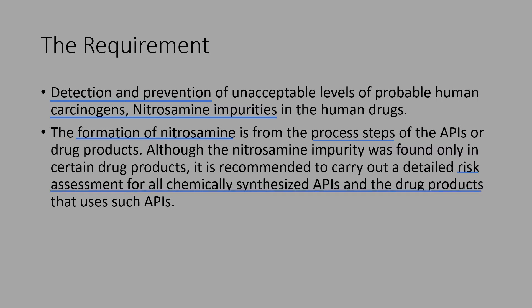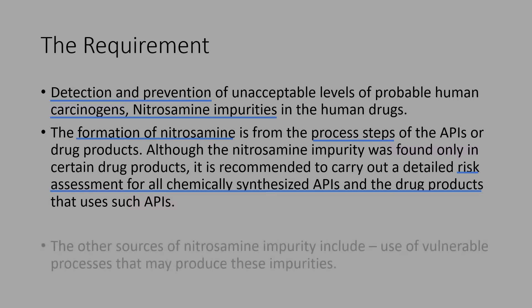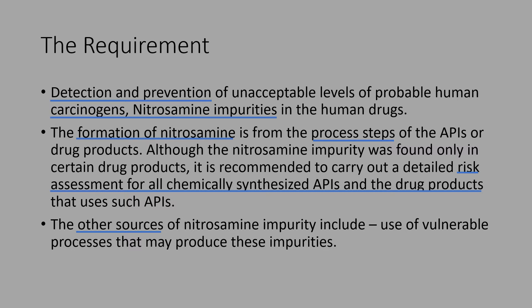Although the nitrosamine impurity was found only in certain drug products, it is recommended to carry out a detailed risk assessment for all chemically synthesized APIs and the drug products that use such APIs. Nitrosamines are formed during chemical reactions in the process. This made it necessary to evaluate all APIs and drug products produced with different synthetic routes for the presence of nitrosamine impurities through a detailed risk assessment. Other sources include use of vulnerable processes that may produce these impurities.